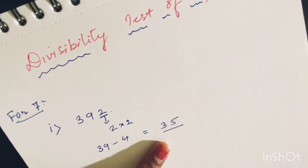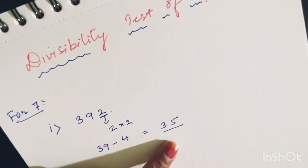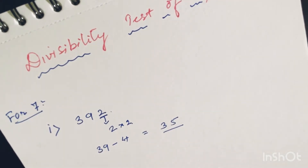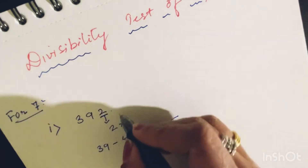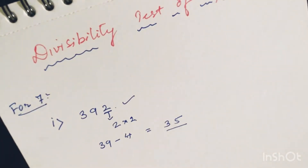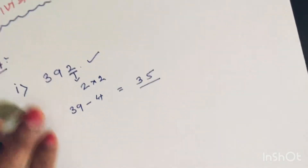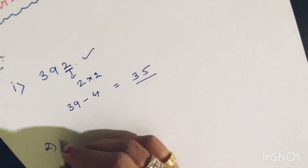The result should be either 0 or a multiple of 7. Here we have 35, and 35 is divisible by 7 because 7 times 5 is 35. So the whole number 392 is divisible by 7. I hope you got it. Let us see one more example.